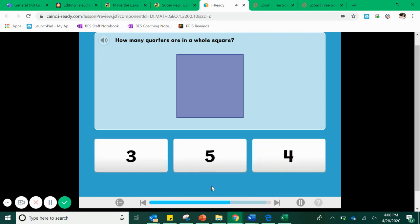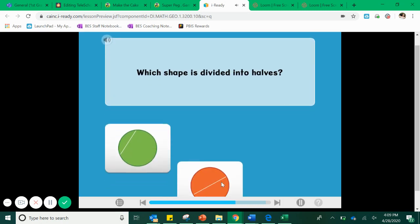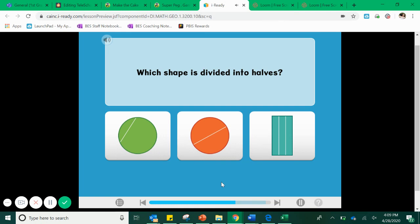Next question. How many quarters are in a whole square? Well I know that quarters and fourths are the same and if fourths are four equal parts then quarters must also be four equal parts. See how we're testing what we know? We've already done so much work with partitioning shapes and now we're able to answer these questions really quickly and easily.